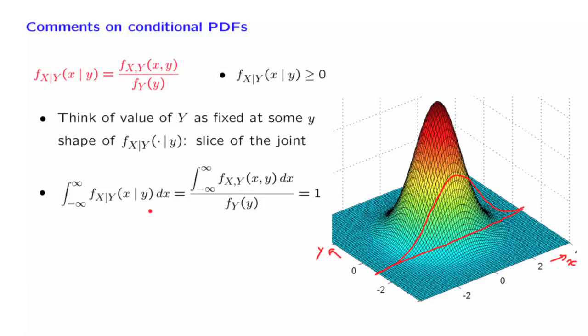The last observation is that we can take this definition and move the denominator to the other side to obtain this formula, which has the familiar form of the multiplication rule. The probability of two events happening is the probability of the first times the probability of the second given the first, except that here we are not really dealing with probabilities, we are dealing with densities.